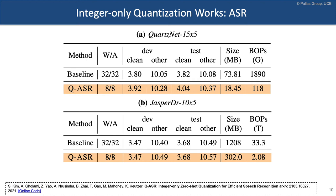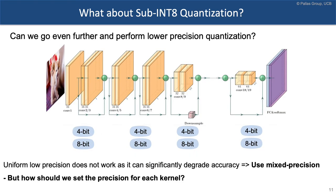The conclusion is that you can perform integer-only quantization with very little accuracy degradation, enabling much more efficient inference. However, a big question is: how can we go lower than 8-bit? With 8-bit there is no accuracy degradation, but certain applications require lower latency. Many hardware platforms, including NVIDIA's RTX, support accelerated 4-bit tensor operations. The problem is that uniform 4-bit for all layers causes accuracy degradation.